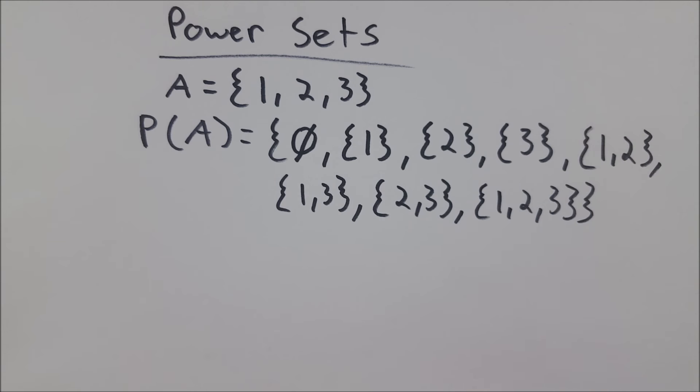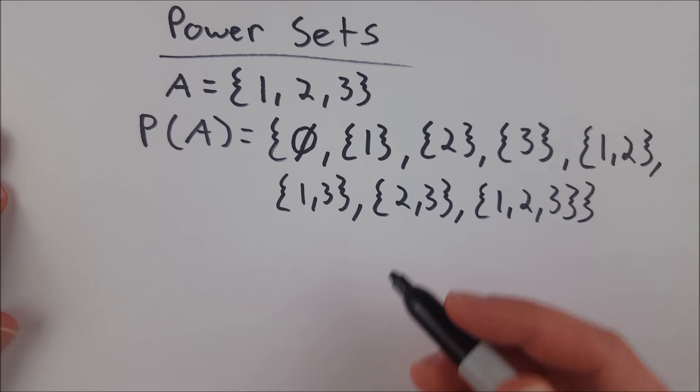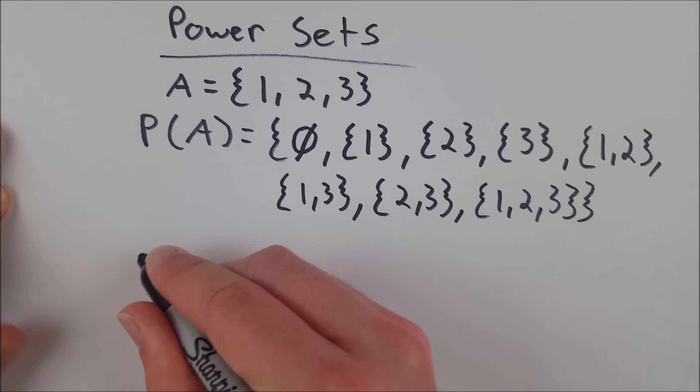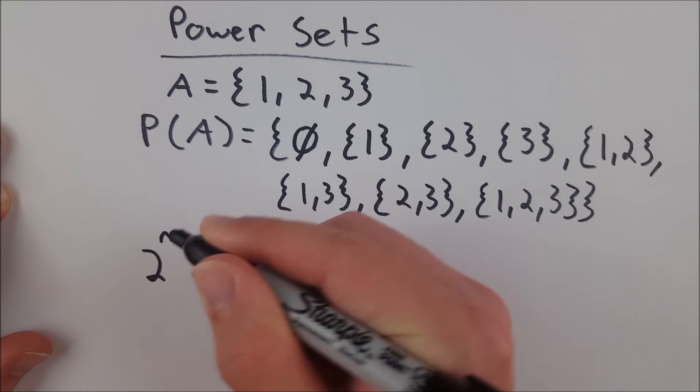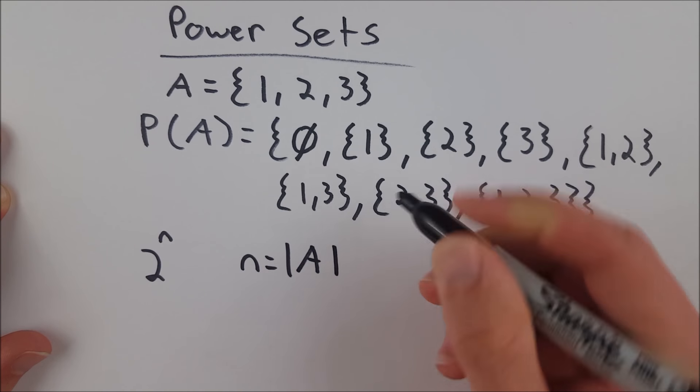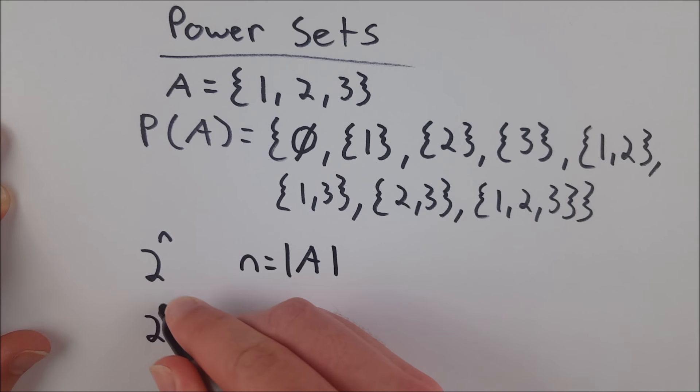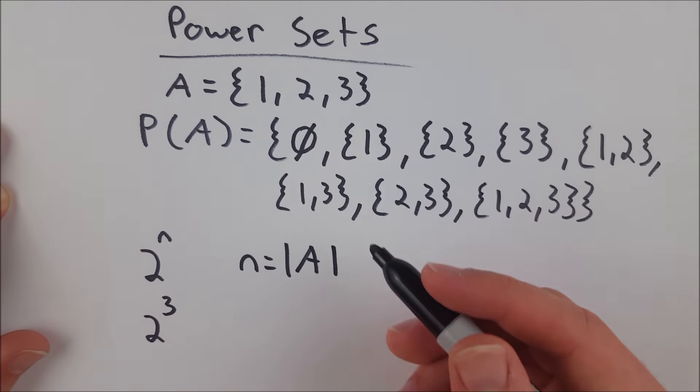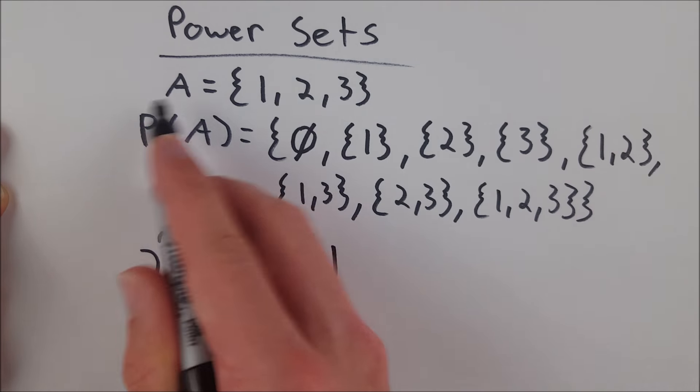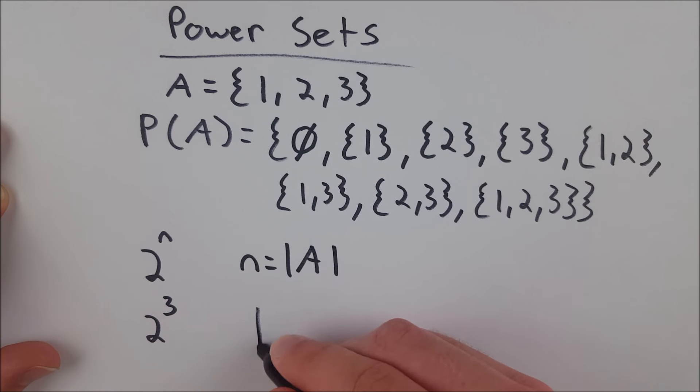And we can sort of check ourselves when we're writing power sets with a simple rule. The amount of subsets that any given set has is 2 to the power of n, where n is the cardinality of the set. In this case, that will be 2 to the third, because A has a cardinality of 3. So that means that there's 8 subsets of A. Therefore, the cardinality of our power set should also be 8.